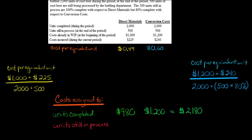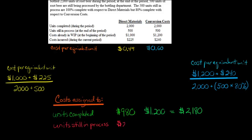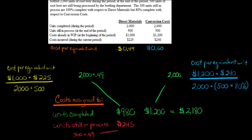Now for the units still in process: there are 500 that are still in process for direct materials, and they're 100% complete with respect to direct materials. So we don't have to do any adjustment to get to equivalent units because there are 500 equivalent units. So 500 times $0.49 — that's going to be $245. So: 500 × $0.49 for the WIP units, and recall 2,000 × $0.49 and 2,000 × $0.60 for the completed units.